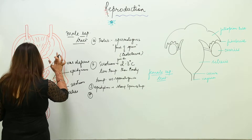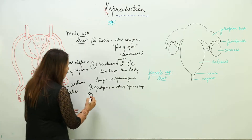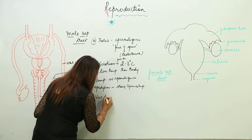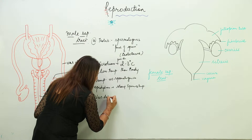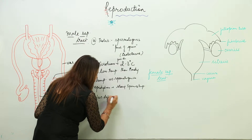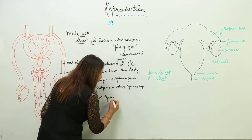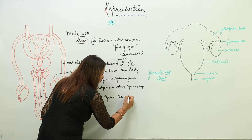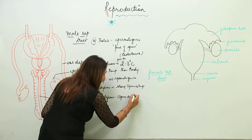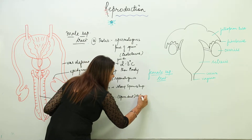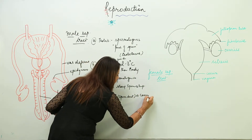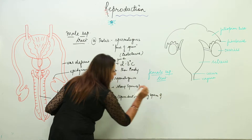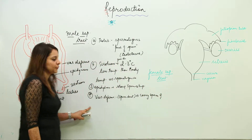There is a tubule which carries out the sperm — that is the vas deferens, also called the sperm duct. Its function is to carry sperms.